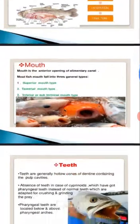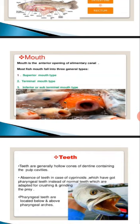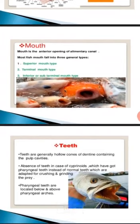After the mouth there are teeth. Teeth are generally hollow cones made of dentine and contain pulp cavities. In cyprinoids, normal teeth are absent. Instead they have pharyngeal teeth, which are located on the pharynx and help in crushing and grinding prey. In cyprinoids, pharyngeal teeth are located below and above the pharyngeal arches as seen in the diagram — they don't have true teeth but do have pharyngeal teeth.